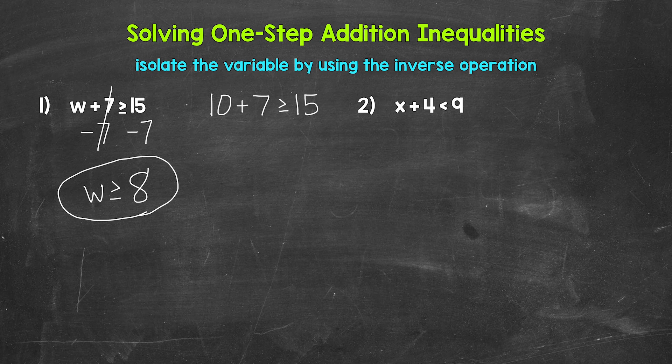10 plus seven gives us 17. 17 is greater than or equal to 15, so 10 does make this inequality true, along with any other number greater than or equal to eight. So we are correct. Our answer for number one: w is greater than or equal to eight.